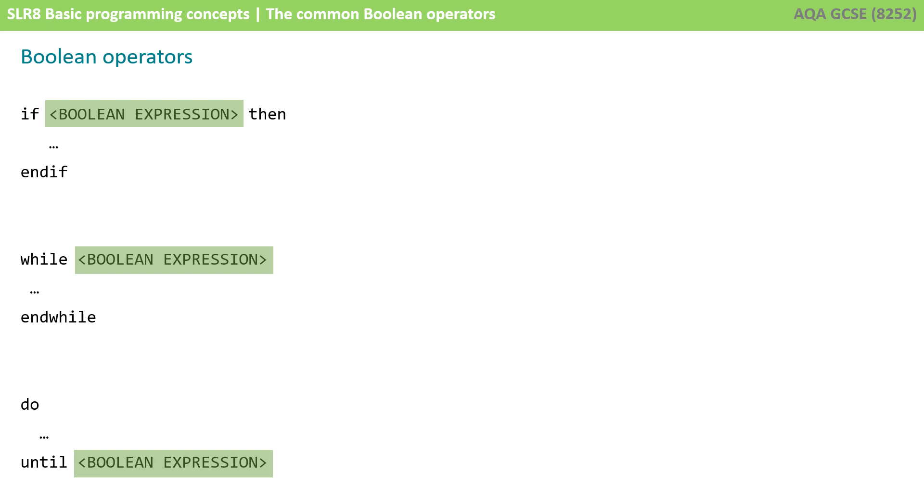Boolean operators, as you can see, are used in what we call Boolean expressions. And we see these in if loops and while loops and do until loops. So if a Boolean expression is true, then run some code.